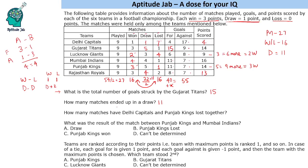How many matches have Delhi Capitals and Punjab Kings lost together? Delhi Capitals lost 7 matches and Punjab Kings lost 1 match, so the total is 8 matches.